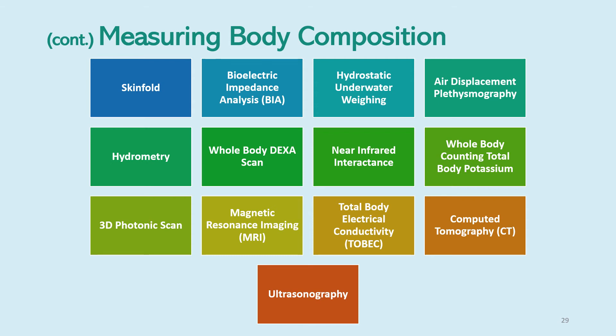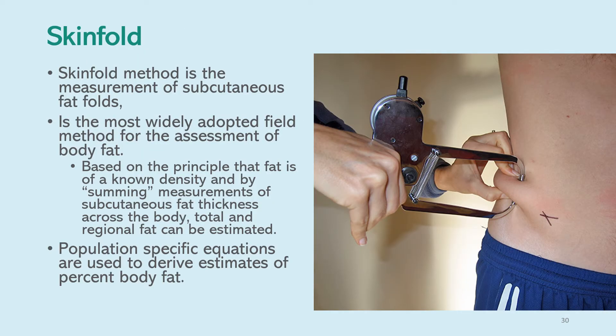Methods include skinfold, bioelectric impedance analysis, hydrostatic underwater weighing, air displacement plethysmography, hydrometry, whole body DEXA scan, near infrared interactants, whole body counting total body potassium, 3D photonic scan, magnetic resonance imaging, total body electrical conductivity, computed tomography, and ultrasonography. In this lecture, I will focus on the first six methods, which are commonly used in assessing body composition.